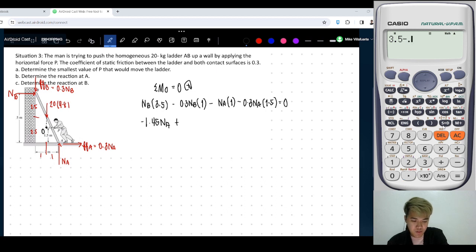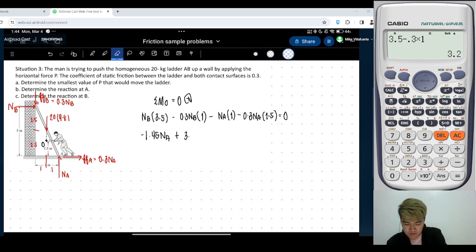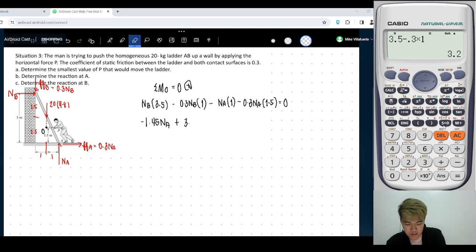Plus 3.5 times 1. Time... Sorry. 3.5 minus 0.3 times 1. That's 3.2 NB equals to 0. Wait, not yet.